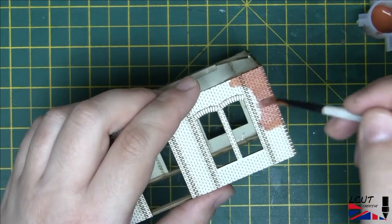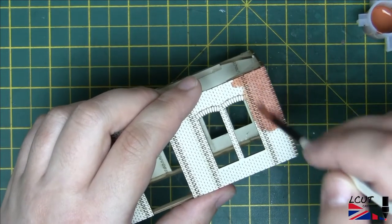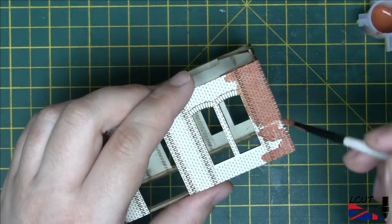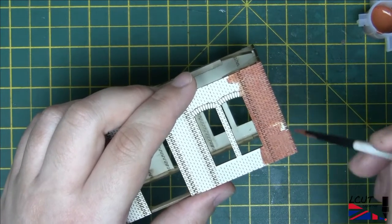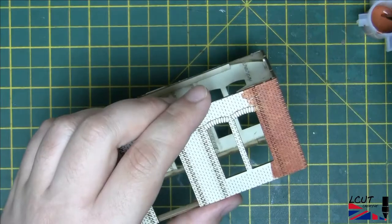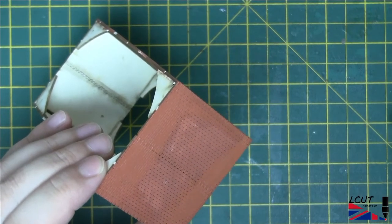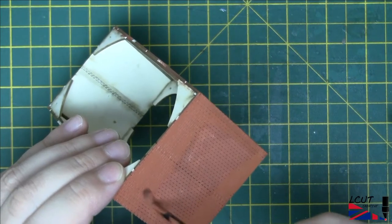The wash method starts with painting the brickwork with your chosen brick color. In this case we will be using Vallejo model color red leather, thinned down with a few drops of water. Individual bricks can be picked out at this stage as well as any variation in color introduced to give a more authentic look.